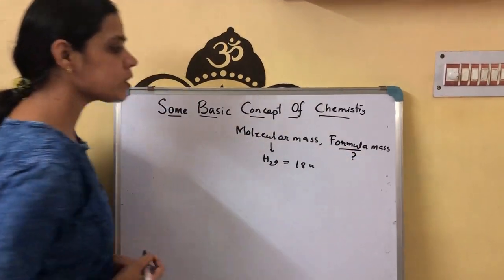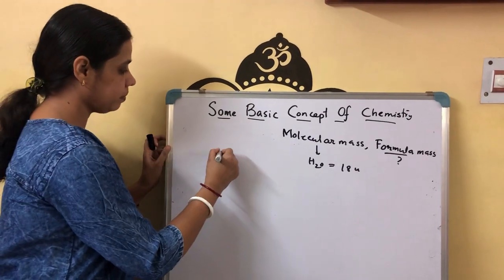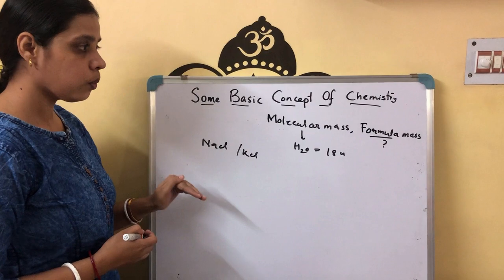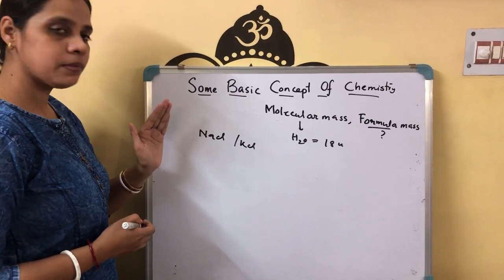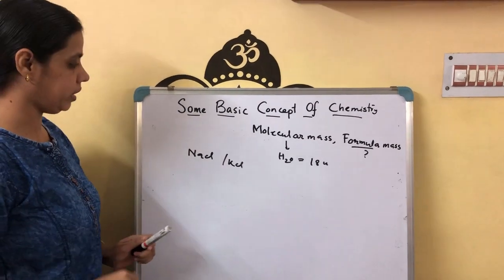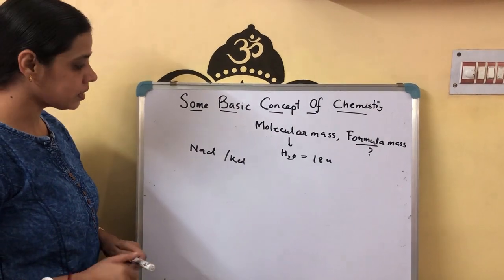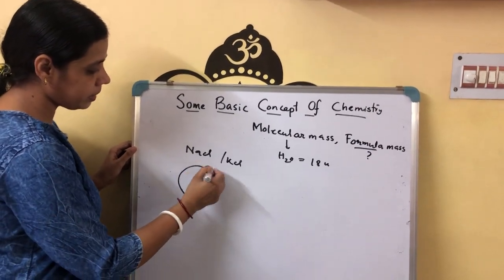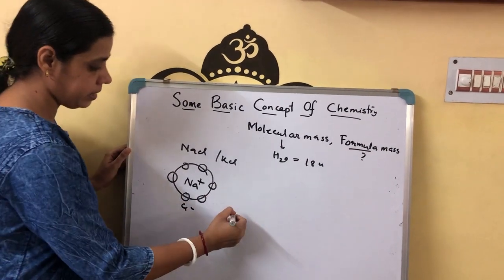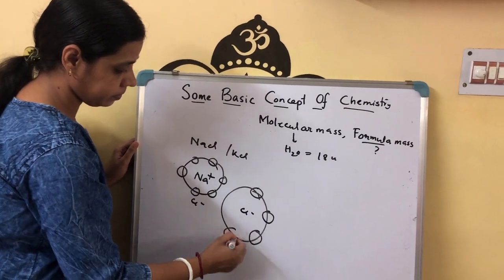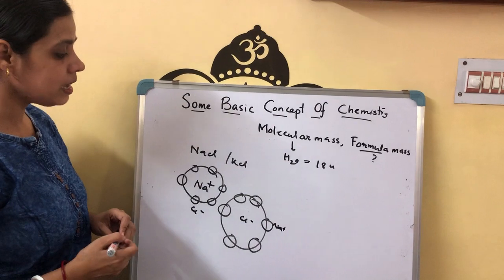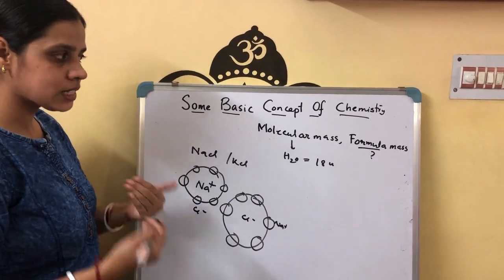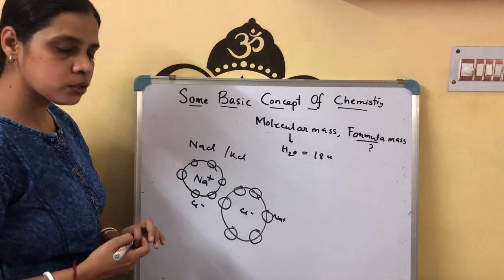Next is formula mass. What is formula mass? You know some ionic compounds like NaCl (sodium chloride) and KCl (potassium chloride) — for this type of ionic compound, we calculate formula mass. Why? Because for this type of compound, we cannot get any discrete single molecule due to their structure. Sodium chloride has a structure where 1 Na⁺ is surrounded by 6 Cl⁻ and 1 Cl⁻ is surrounded by 6 Na⁺. So for this type of structure, we cannot get any discrete molecule. What we do is simply write their formula.